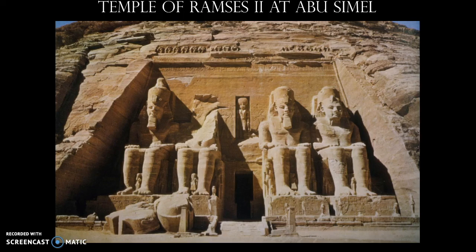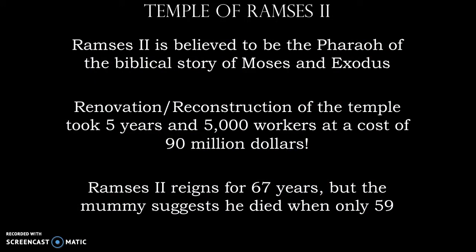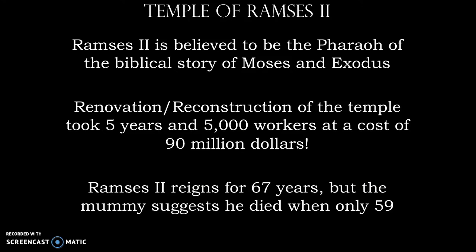Here we have the Temple of Ramses II. Ramses is believed to be the pharaoh of the biblical story of Moses and Exodus. He was a very bold military commander and very politically shrewd. The renovation and reconstruction of the temple moved it to higher ground between 1964 and 1969, cost $90 million, and 5,000 people worked on this multinational project. Ramses II reigned for 67 years, but the mummy we have suggests he died closer to the age of 59. It was rumored he had 100 children.